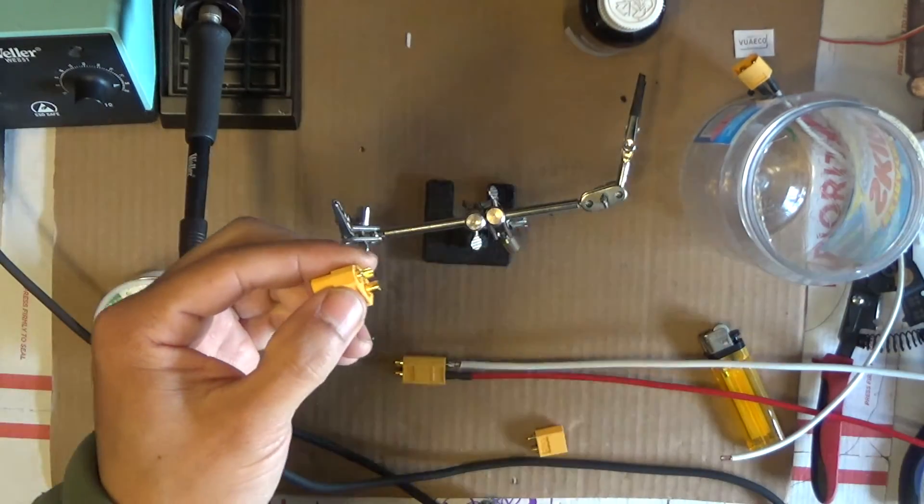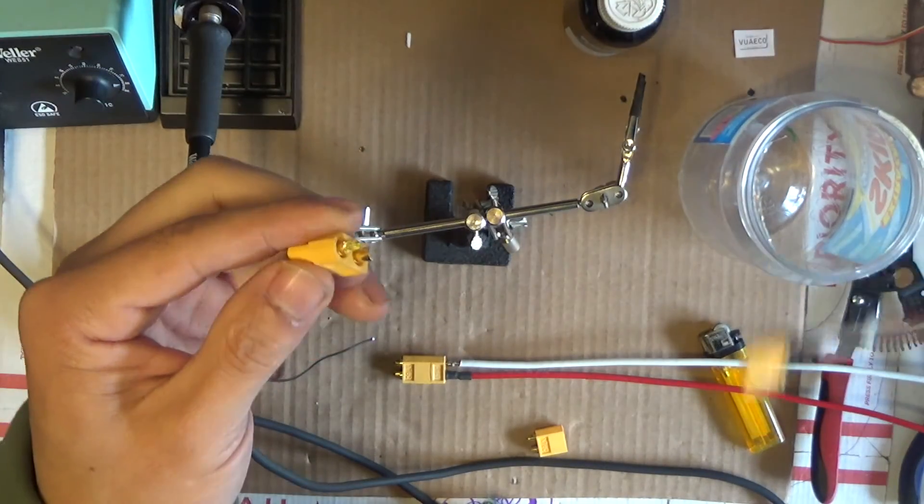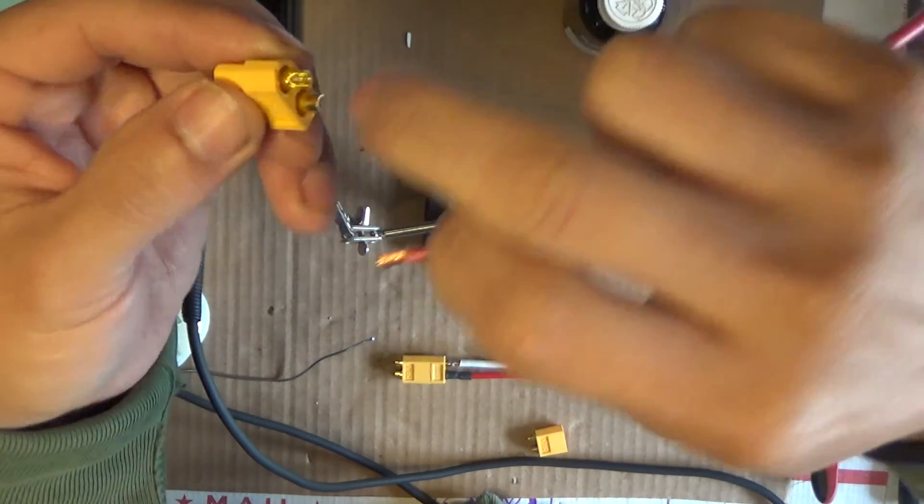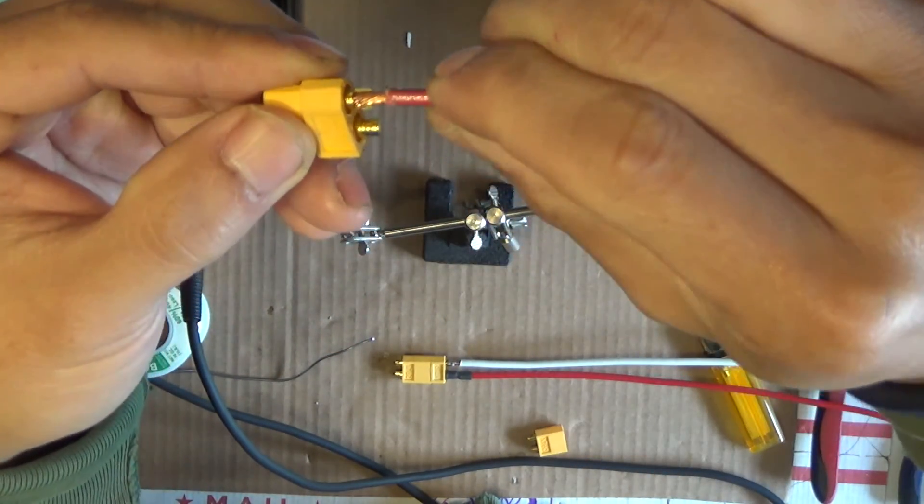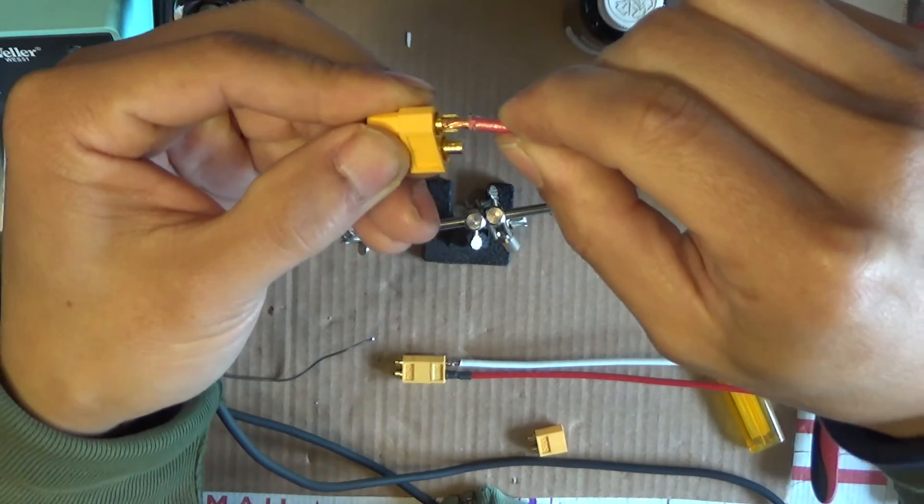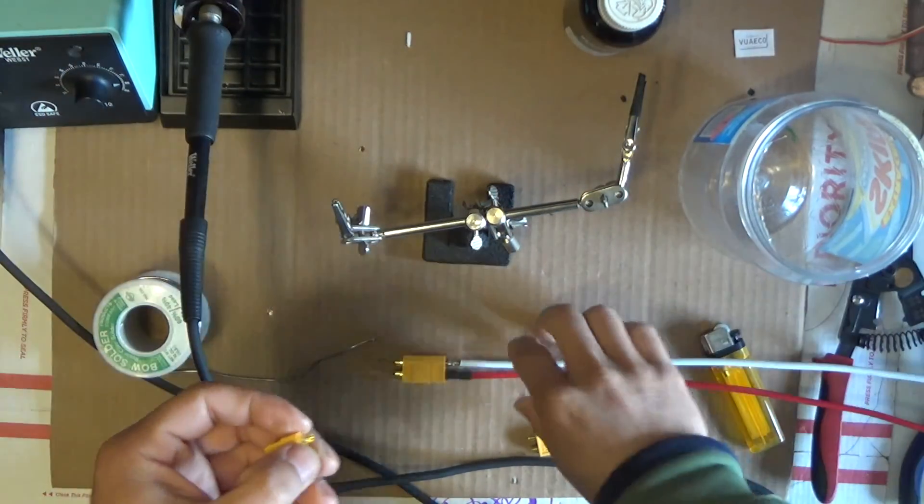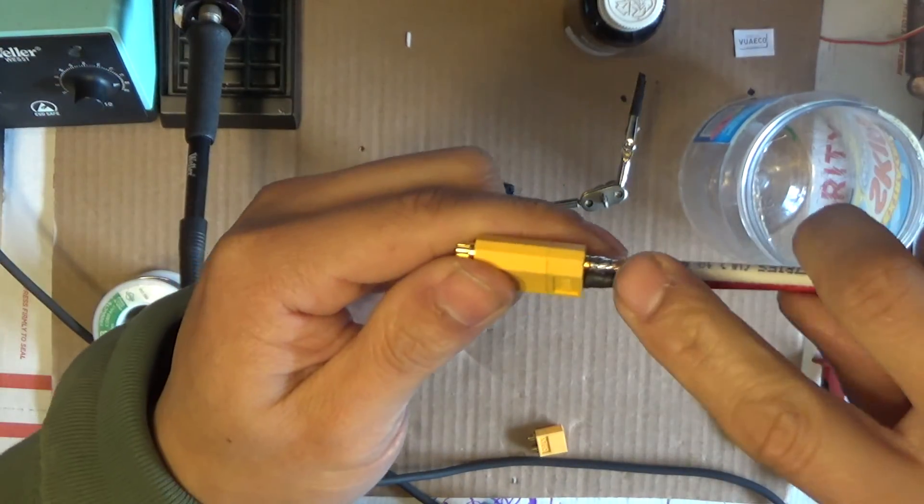So when you solder the wire, the wire just rests on the outer ring here, just like that. You can't push any more in, but once it's been soldered it should be secure enough.